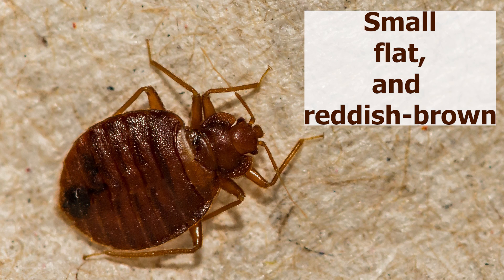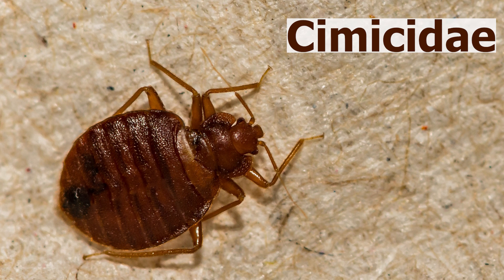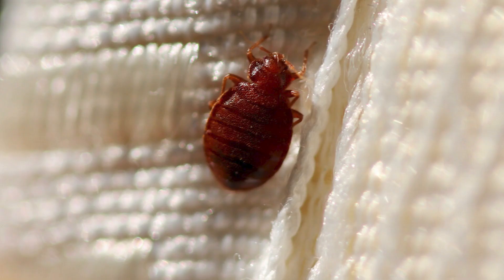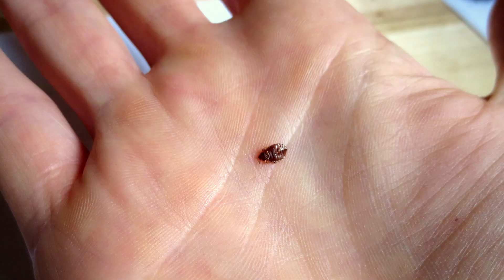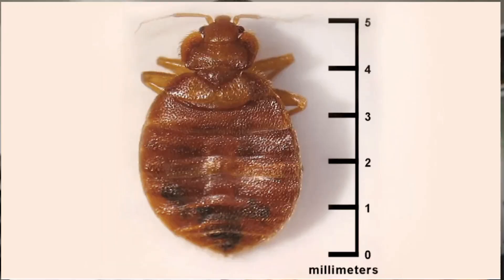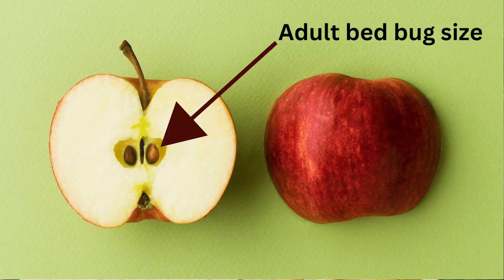Bed bugs belong to the family Cimicidae. They have a distinctive appearance that can help you identify them. In terms of size, adult bed bugs are quite small — about four to five millimeters in length, comparable to the seed of an apple.